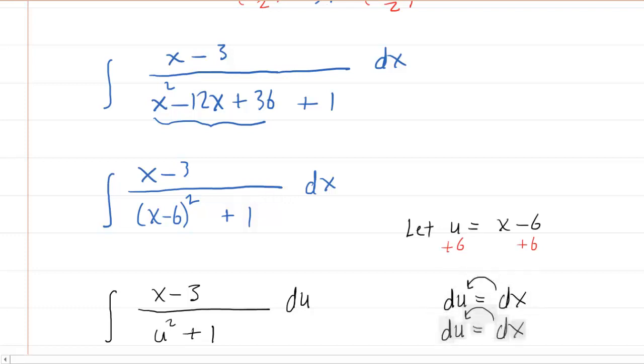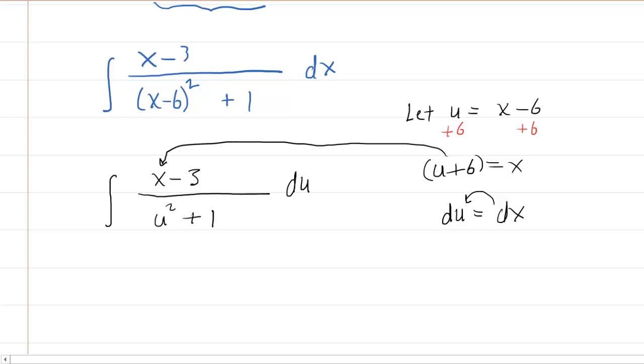We don't want that mixture of variables. So if we go back to our problem here, if we were to add six on both sides of that little substitution that we made, then we would see that u plus six is equal to x. So what we'll do is actually substitute u plus six for this x right there.